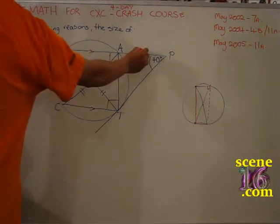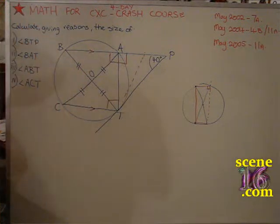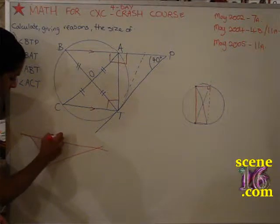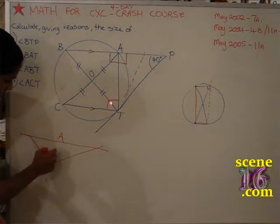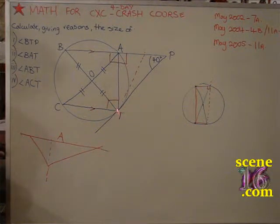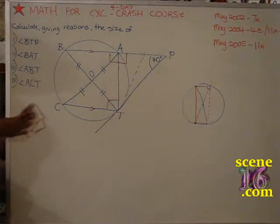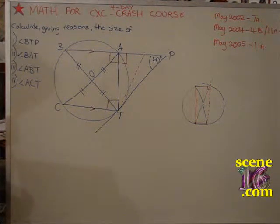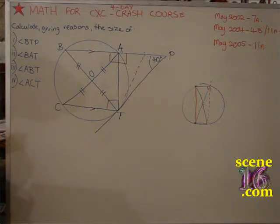What if that would be the line? If that would be the line, then they would not be the same. But the question tells us that T at this point of the circle is a tangent. Could you read out the part of the question where they refer to the tangent? TP — the tangent at T meets BA produced at P.